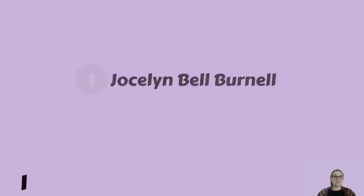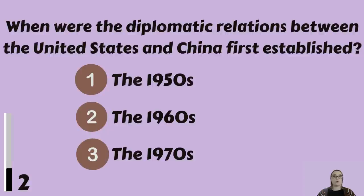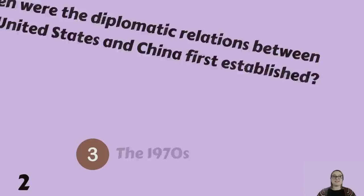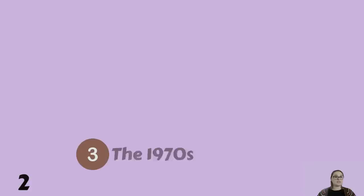When were the diplomatic relations between the United States and China first established? The 1950s, the 1960s, or the 1970s? That happened in the 1970s.